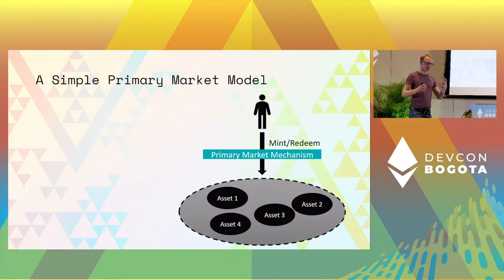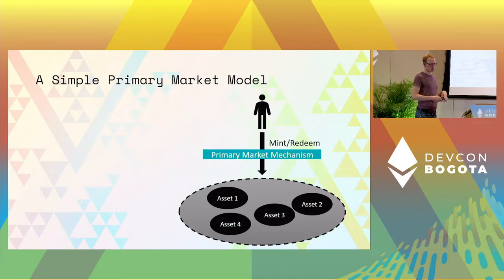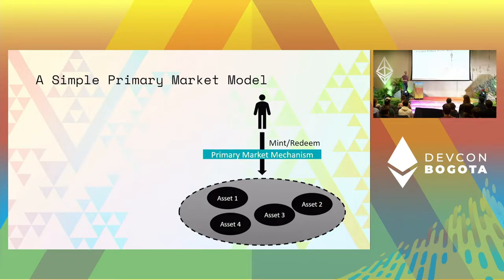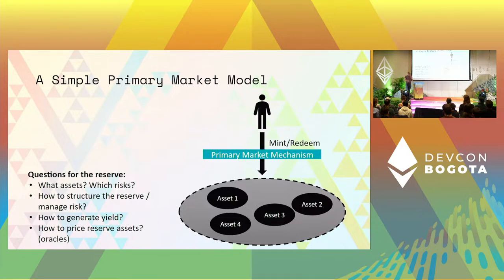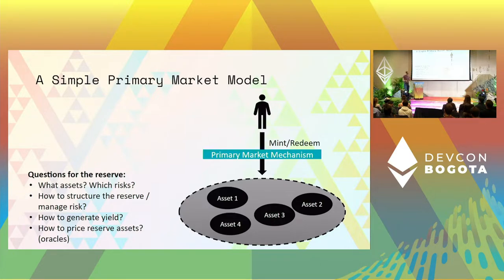To build such a system there are many different challenges. We have a reserve that consists of different asset classes structured in some way. You need to answer questions like: which assets should that be? Which risks are these exposed to? How do you structure the whole thing so that the risks are contained? How do you generate data on the structure — you probably want to price these things with oracles. These are all things I'm not going to talk about today, but questions we still had to answer for Gyroscope. Today I want to talk about the mechanism for determining redemption.